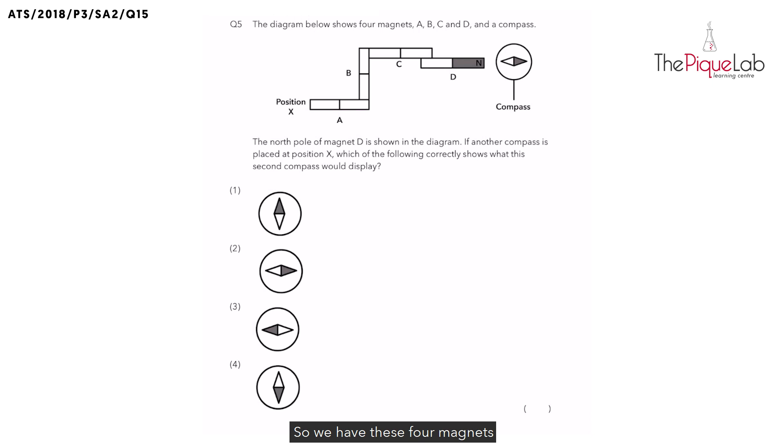So we have these four magnets over here, A, B, C, D and a compass. Take note, inside a compass, there's actually a needle. The needle in the compass is a magnet, which means it has poles.